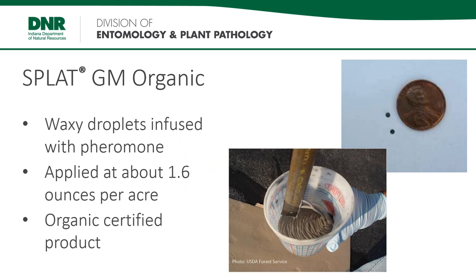The product Splat GM Organic is used for mating disruption. The female pheromone is infused into a waxy biodegradable carrier made from food grade materials. This formulation specifically affects Spongy Moth and has no effect on other insects or wildlife. The application rate is about 1.6 ounces per acre — that's equivalent to about three tablespoons spread over a football field.